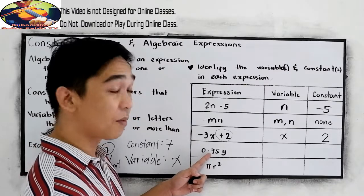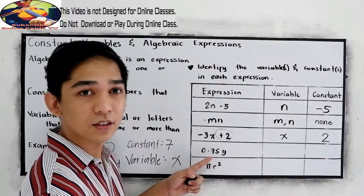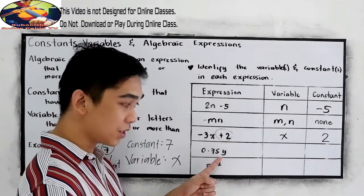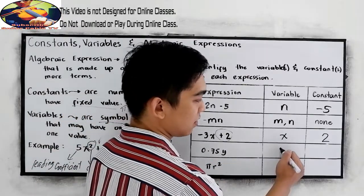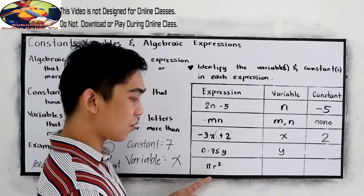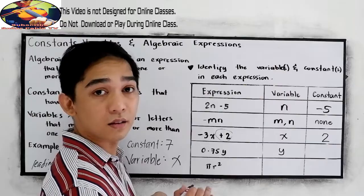Then, number 4, 0.75y. So we have a variable, which is y. How about for the constant term? Our constant here is none.